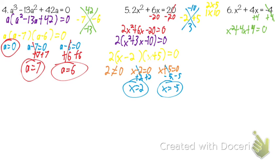Is there a GCF? No. So we make an X for three terms. What goes at the top? 4 — a times c is 1 times 4. What goes at the bottom? Also 4. If it's going to multiply to a positive, two of the same sign. If it's going to add to a positive, both going to be positive. What are two factors of 4 that add to 4? Two and two.